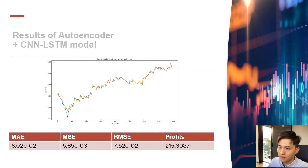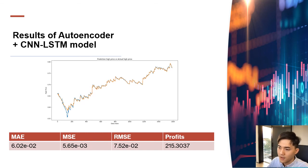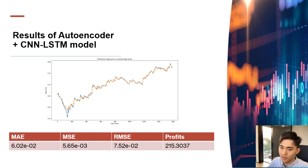In the results, the line graph shows the orange line representing the predicted high price — the model fits the real data well without certain sharp rises or falls. The evaluation metrics include MAE, MSE, and RMSE, with a focus on RMSE. The magnitude of the RMSE result is 10 to the power of minus 2, indicating acceptable model performance. For backtesting, the model achieves $215 in profit over one year with capital of $10,000.